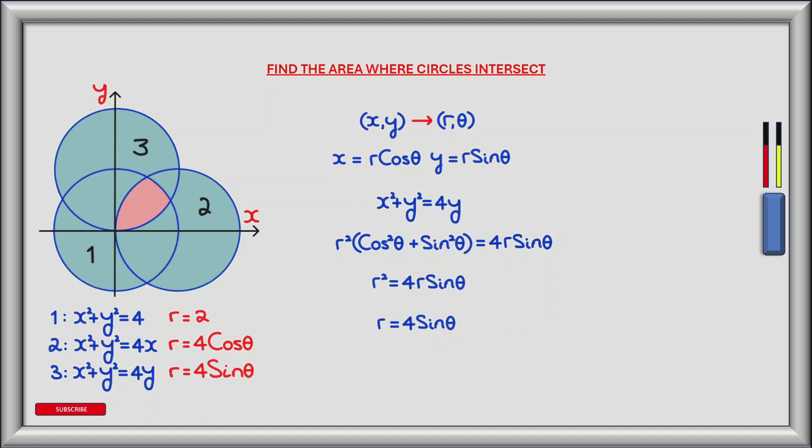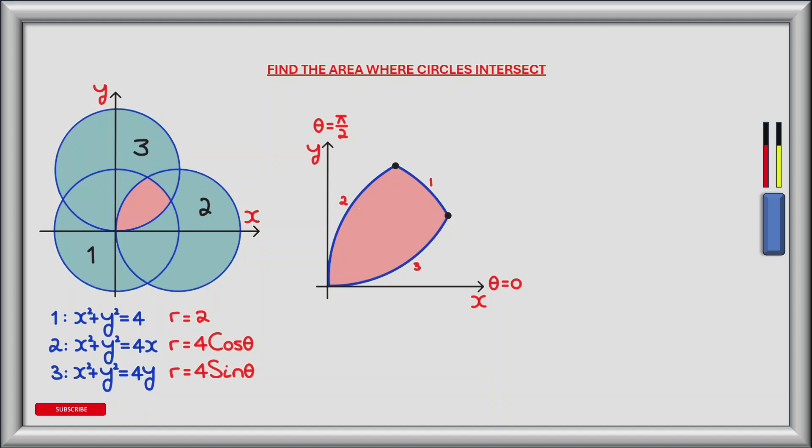Now that we've found the radial distance r of each of the circles, let's look at the behavior of r as we compute the region shown in red. As r rotates counterclockwise from theta equals 0 to theta equals pi by 2, the radial distance from the origin is first determined by circle 3. When circle 3 intersects with circle 1 at some angle theta, the radial distance is then determined by circle 1 until it intersects with circle 2. At that point, and until theta equals pi by 2, circle 2 determines the radial distance r. At theta equals pi by 2 the area is complete.